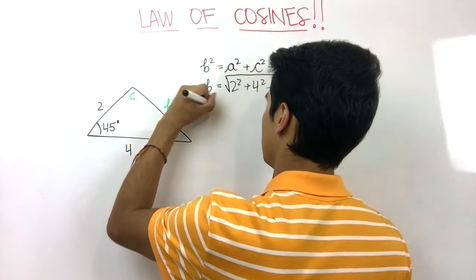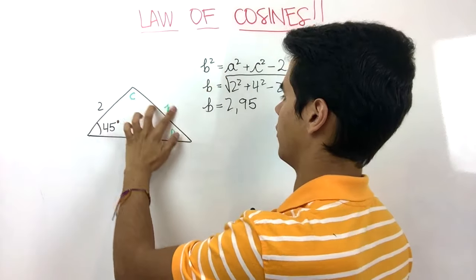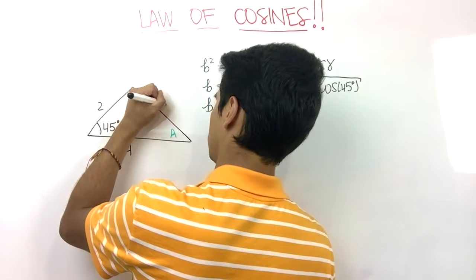Finally, we end up knowing that B is equal to 2.95. So we get rid of this and we put 2.95.